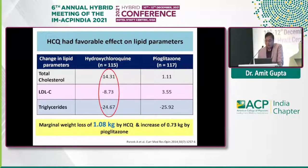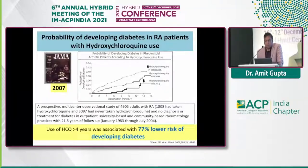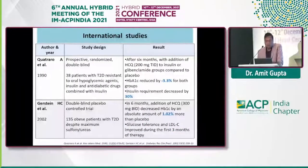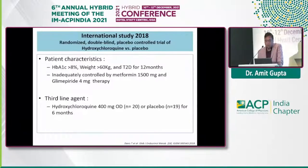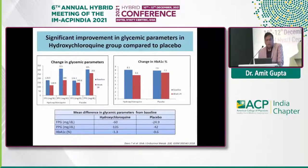Many international studies have been published showing that use of HCQ was associated with almost 77 percent lower risk of developing diabetes in patients taking it for rheumatoid arthritis. All of these studies have shown significant reduction in fasting blood glucose, postprandial glucose, and inflammatory markers, along with significant improvement in glycemic parameters compared to controls.